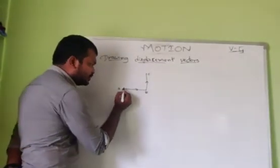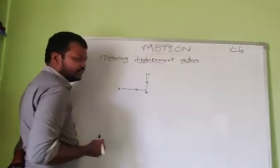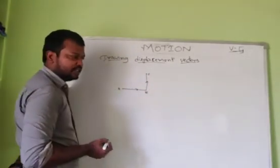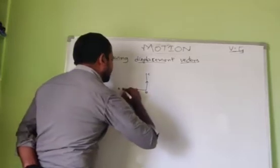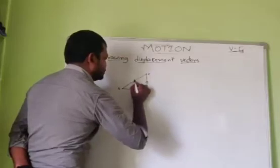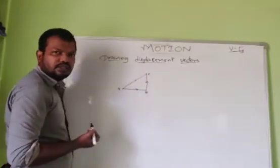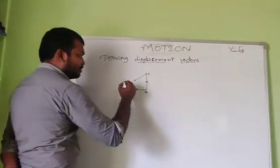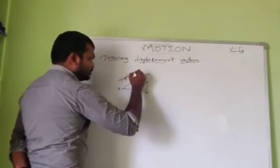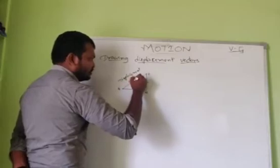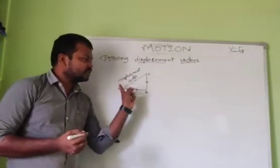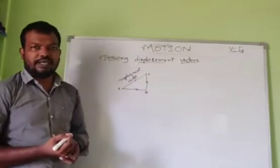What is the initial position of this body? A is the initial position. What is the final position? C is the final position. If you draw a straight line from the initial position to the final position, it is called the displacement vector — the shortest distance from the initial position to the final position.